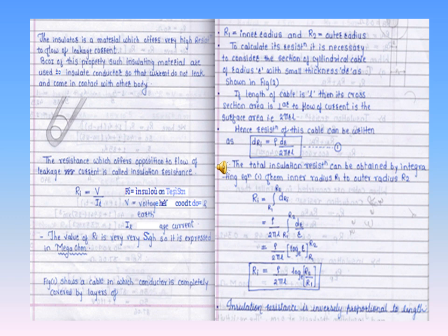The resistance of insulating materials decreases with increase in temperature — they have a negative temperature coefficient. Moisture content also affects insulation resistance: if moisture increases, the value of Ri decreases. From the derivation, the final formula for Ri = V / (2πL) × log(R2/R1), where R1 is the radius of the conductor and R2 is the radius of the conductor plus the insulation thickness. An important point: insulation resistance is inversely proportional to length, while conductor resistance is directly proportional to length.